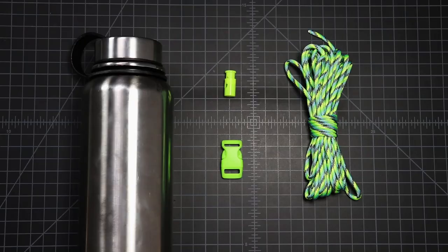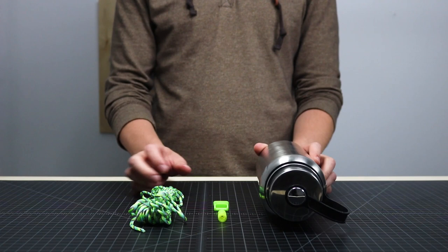Hey guys, welcome back to Paracord Planet. Today we're going to be making a water bottle handle for a wide mouth water bottle such as a Hydro Flask or a Camelback.